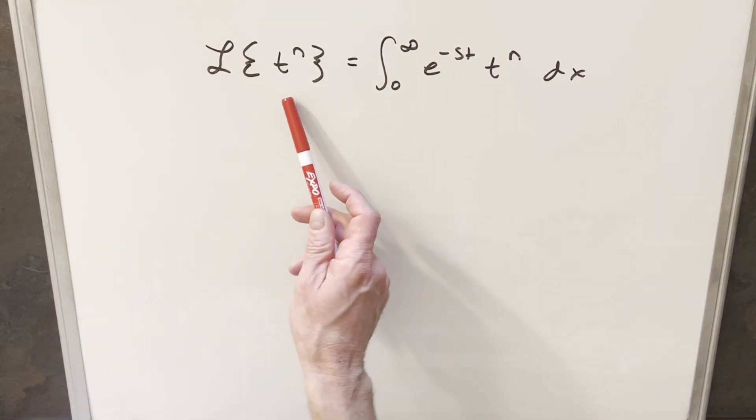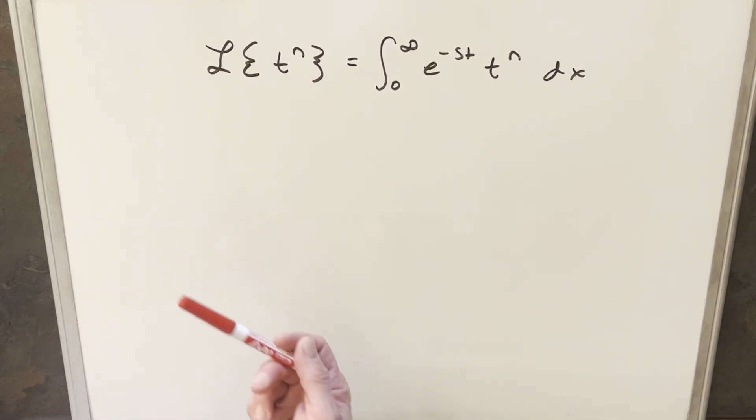Now, we've already done a video on the Laplace transform of t, so the n value is just 1. Some people will do this where they get a formula for just integer values of n, and then do something separate for real values of n. What I'm going to try to do here is just cover this with one formula basically, where we'll just consider n a real number in this case.